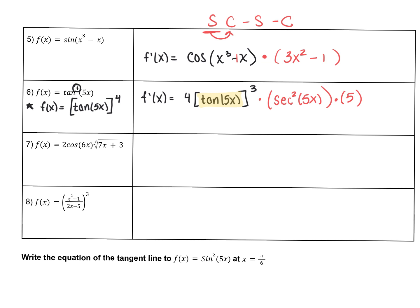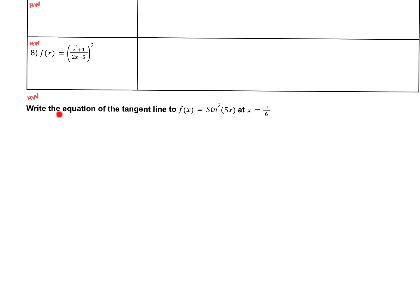I've now covered everything there is to know about the chain rule, so I'd like you to apply it. I'm leaving you with problems 7, 8, and 9 for homework, and we'll start class by going over them. Problem 7 involves multiplying two functions together, so you'll need the product rule along with the chain rule. Problem 8 has something raised to the third power — that's a power rule — but the derivative of the inside will require the quotient rule. Problem 9 asks you to write the equation of a tangent line at x equals pi over 6. Just try your best.